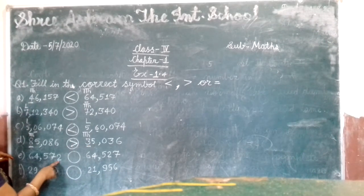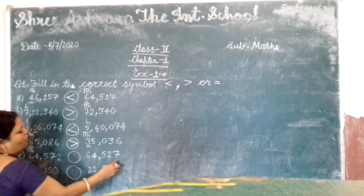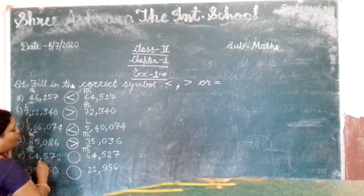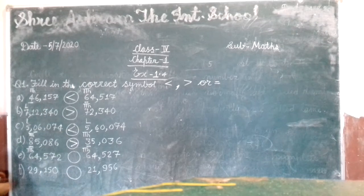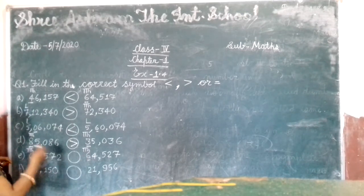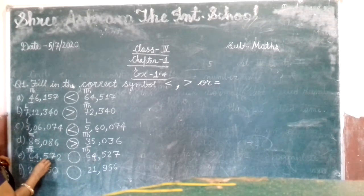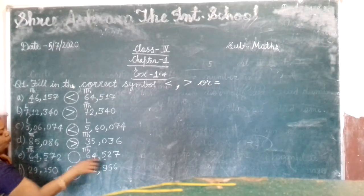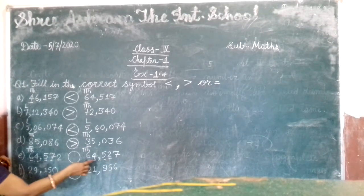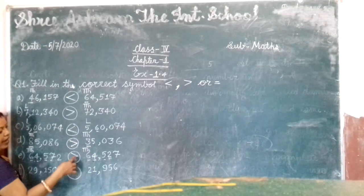Next number. Counting: ones, tens, hundred, thousand, ten thousand. And the other side: ones, tens, hundred, thousand, ten thousand. Both have ten thousand places — same number of digits. Start from the first digit: six and six — both equal. Next digit: four and four — both equal. Third digit: five and five — both equal. Fourth digit: seven and two. Which one is greater? Seven is greater. So open mouth towards seven and closed mouth towards two.